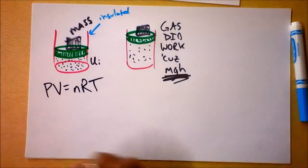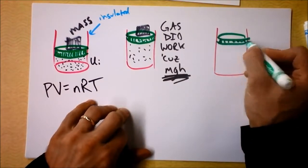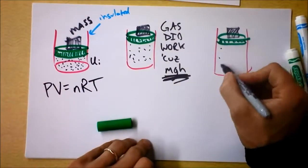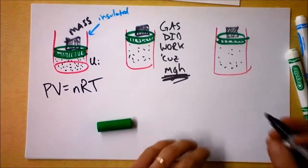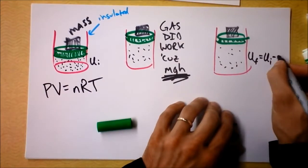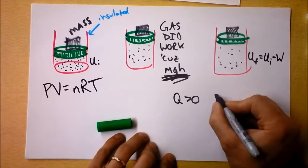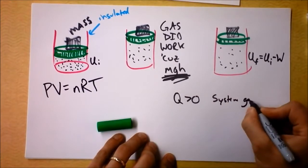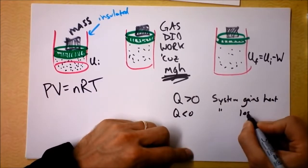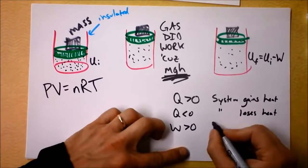We're going to conclude that the gas having done work brings us to this final state. U final is going to be our initial energy of the gas minus the work done by the gas. Q greater than zero means the system gains heat. Q less than zero means the system loses heat. Work greater than zero — positive work — means that the system does work.